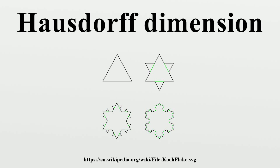It is impossible to map two dimensions onto one in a way that is continuous and continuously invertible. The topological dimension, also called Lebesgue covering dimension, explains why. This dimension is N if, in every covering of X by small open balls, there is at least one point where N plus 1 balls overlap. For example, when one covers a line with short open intervals, some points must be covered twice, giving dimension N equals 1.